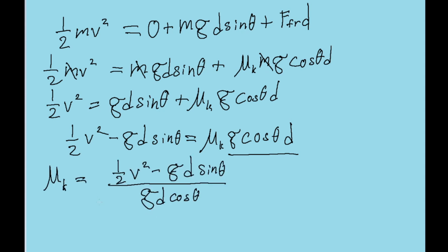And now we have this equation, where the coefficient is equal to one-half v squared minus gd sine theta all over gd cosine theta. Now if you want, you can pull out your calculator, type in all this stuff using the information we're given in the problem, and there's your answer.